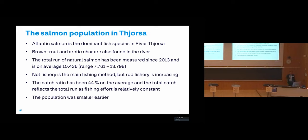The total run of natural salmon has been measured since 2013 and it's on average around 10,000 fish. Fishing effort is mainly in net.